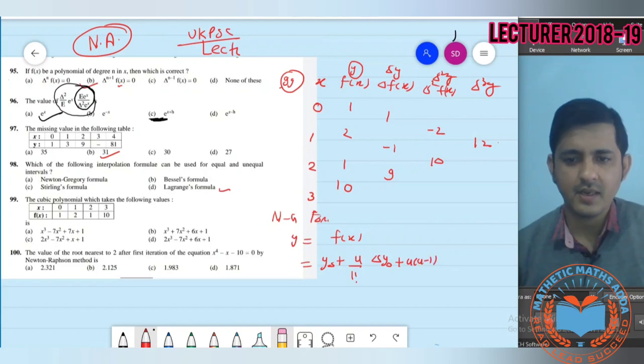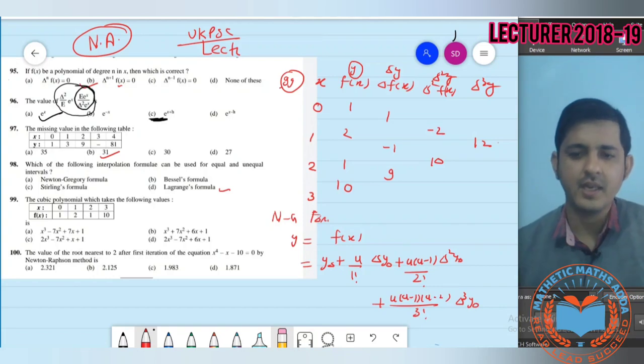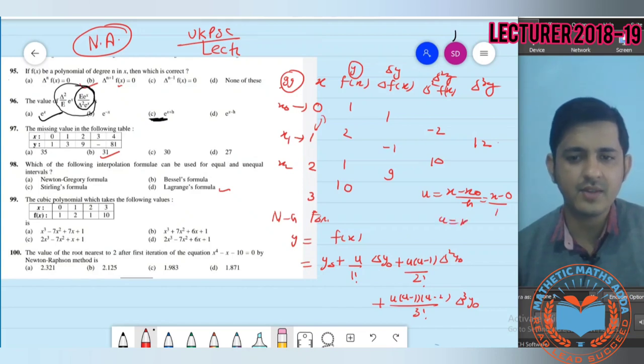Now we use Newton-Gregory forward formula: y equals y₀ plus u/1! del y₀ plus u(u-1)/2! del squared y₀ plus u(u-1)(u-2)/3! del cube y₀. Here u equals (x minus x₀)/h. x₀ is zero and h is 1, so u equals x.